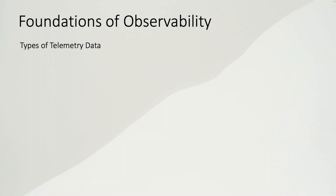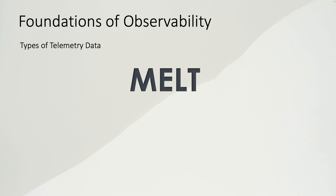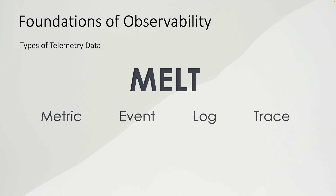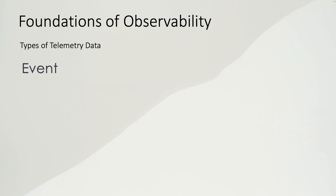Now that we have learned about observability, let's see what types of telemetry data we collect in an observability platform. To remember these data types, you can think of the word MELT: M is for metric, E is for event, L is for log, and T is for trace.